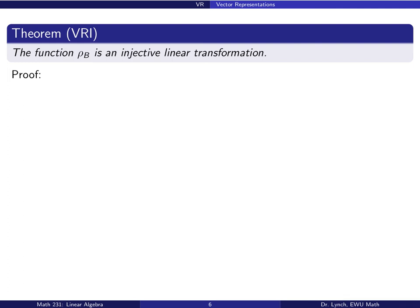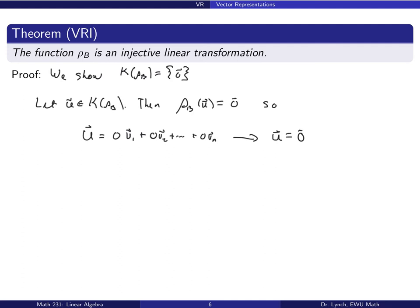The function ρ_b is an injective linear transformation. We prove this by showing the kernel of ρ_b is trivial. Let u be an element of ker(ρ_b); then ρ_b(u) = 0. That means u can be written as a linear combination of basis vectors v₁, …, vₙ with all coefficients equal to 0, which forces u to be the zero vector. So the kernel is trivial and ρ_b is injective.